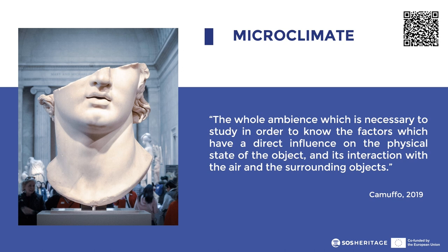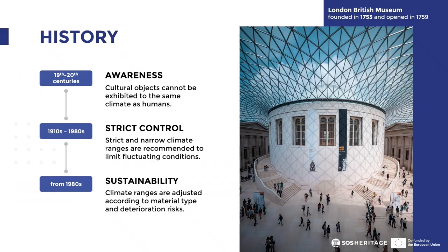The first approaches in the history of this field were to fix hydrothermal intervals with the aim to limit fluctuating conditions. Since the 19th century, it grew the awareness that cultural objects are better preserved in climate conditions different from those aimed at human comfort. Nevertheless, it was later noticed that these climate guidelines were unnecessarily strict, and that maintaining such narrow ranges was too expensive and in some cases impractical — for example, for small and medium-sized museums.